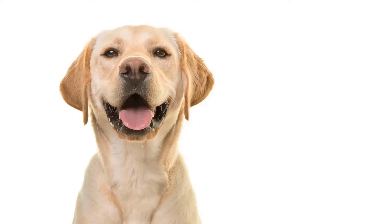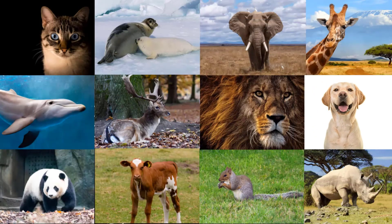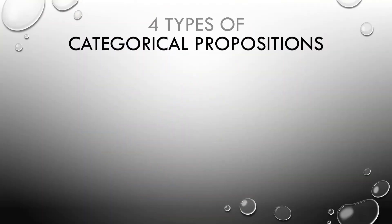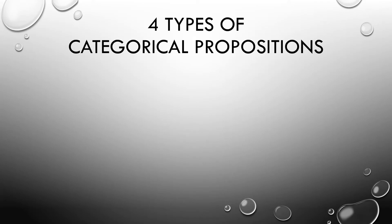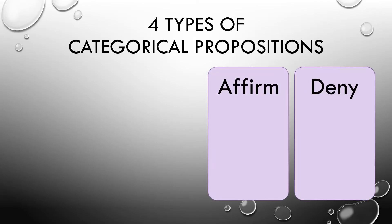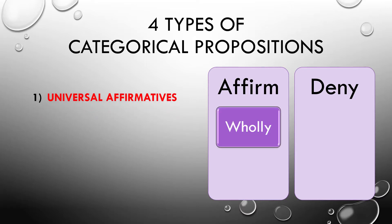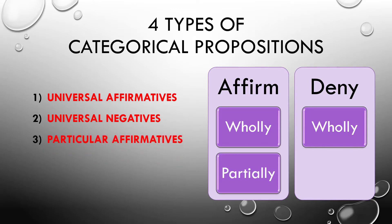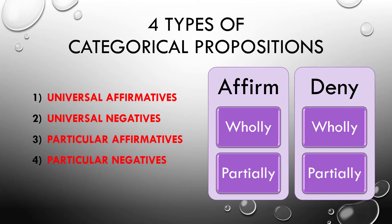Using the same examples as last time: all dogs are mammals, and some dogs are not German shepherds. Because we can either affirm or deny wholly or partially, we end up with four subtypes: universal affirmatives, affirming something about an entire category; universal negatives, denying something about an entire category; particular affirmatives, affirming something about part of a category; and particular negatives, denying something about part of a category.